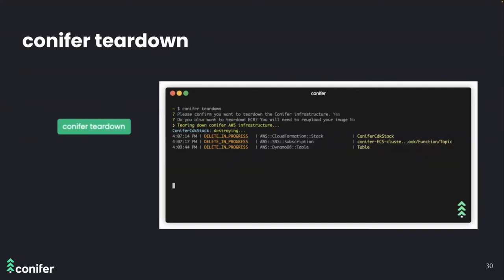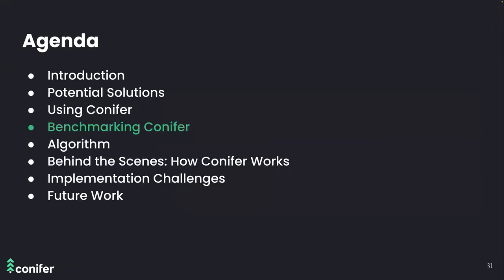When the user wants to remove all cloud infrastructure previously built using `conifer deploy`, they can type `conifer teardown`. This removes all AWS resources except for the image in ECR and the database, unless otherwise specified. So far we've introduced Conifer, discussed how to use it, and who might be interested. Now let's examine how much Conifer can speed up end-to-end testing.